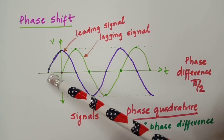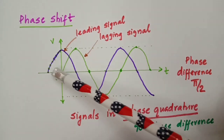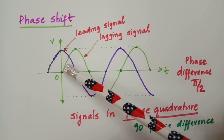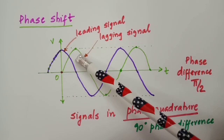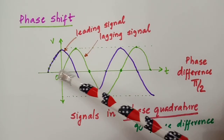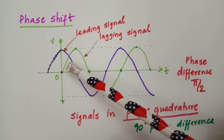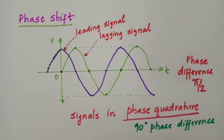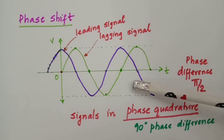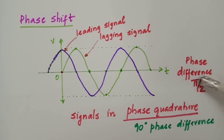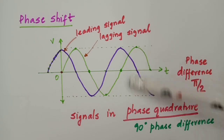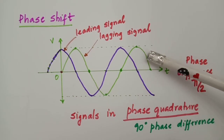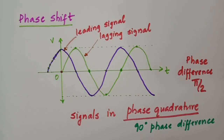This difference is what we call the phase difference. When we express phase difference, we say that a signal is lagging or a signal is leading with respect to some other signal. This is the same concept we use in defining phase modulation. Since these two signals have a phase difference of 90 degrees or π/2 radians, we say that these signals are in phase quadrature — they differ by a phase difference of 90 degrees.